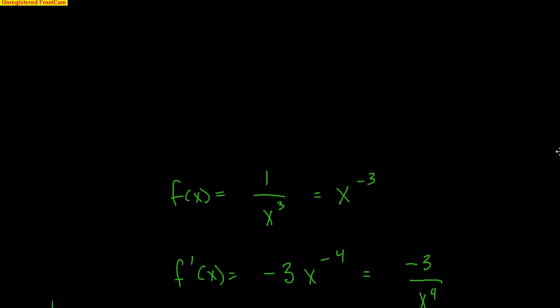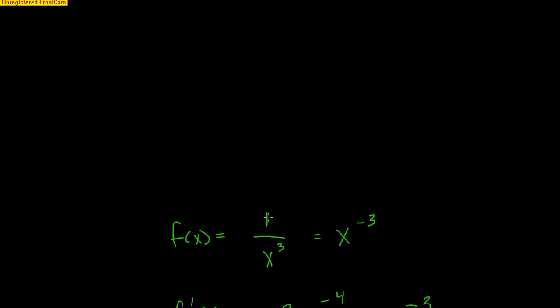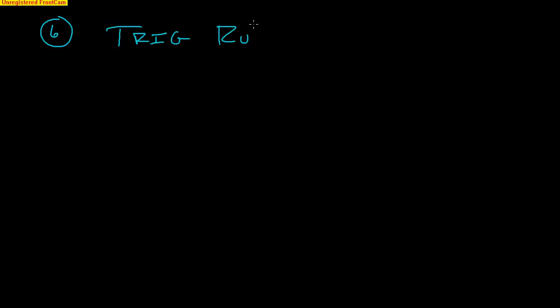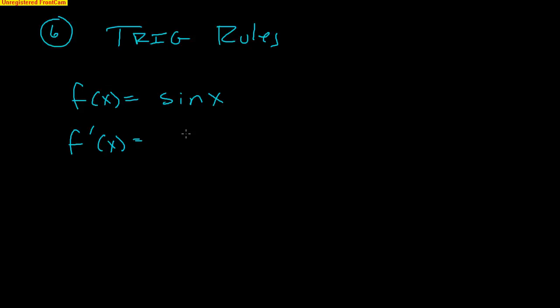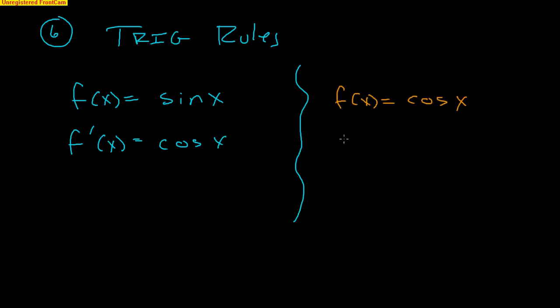Now let's do the trig rules — rule number 6. With trigonometry, these are rules you just have to memorize. First: if the function is sine of x, the derivative is cosine of x — the derivative of sine is cosine. Second: if the function is cosine of x, the derivative is negative sine of x — not just sine, but negative sine. So remember: derivative of sine is cosine, and derivative of cosine is negative sine.